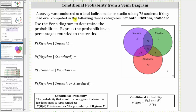A survey was conducted at a local ballroom dance studio asking 70 students if they had ever competed in the following dance categories: smooth, rhythm, and standard. Use the Venn diagram to determine the probabilities, express the probabilities as percentages rounded to the tenths place value, which means we'll have to first get the decimal to three decimal places.